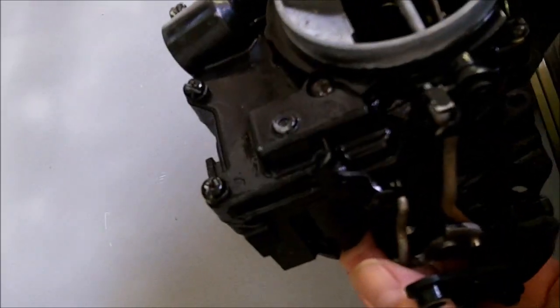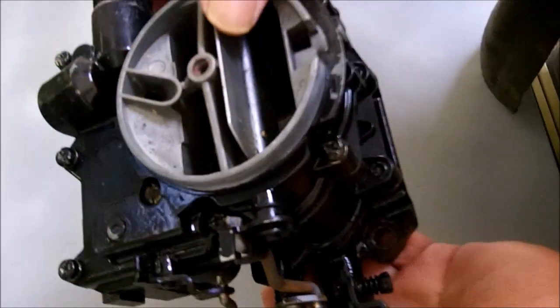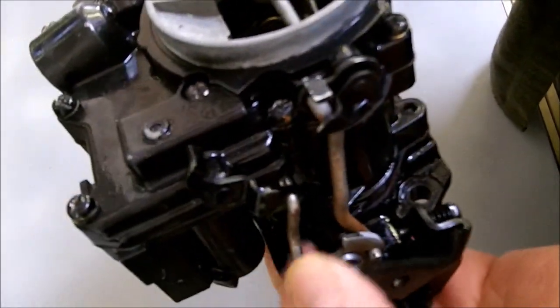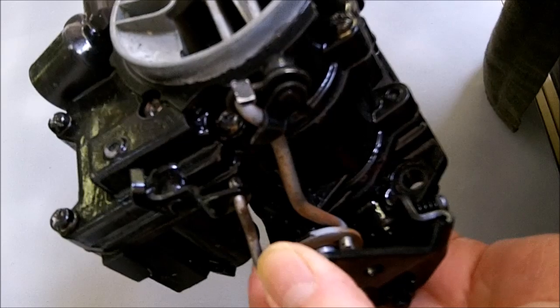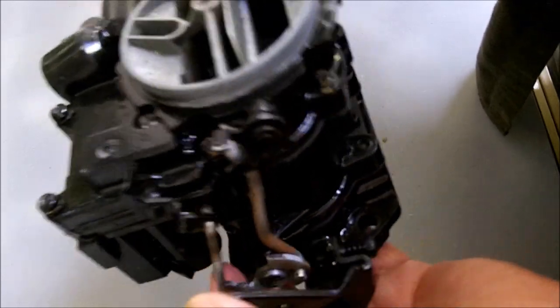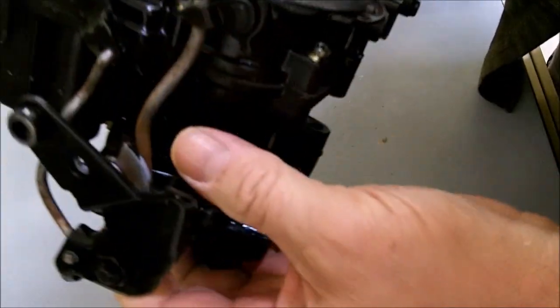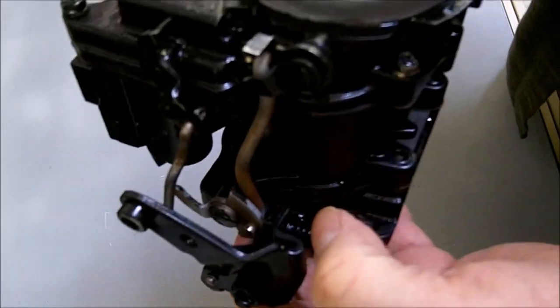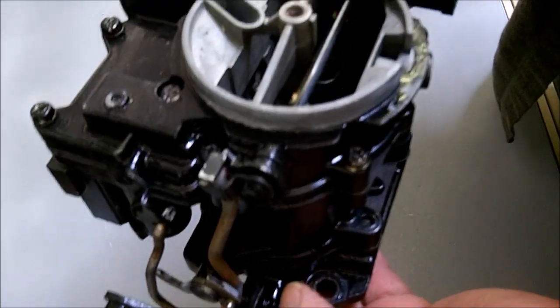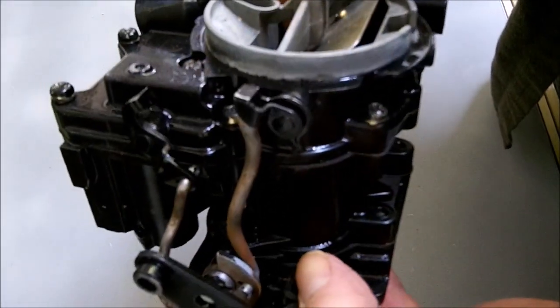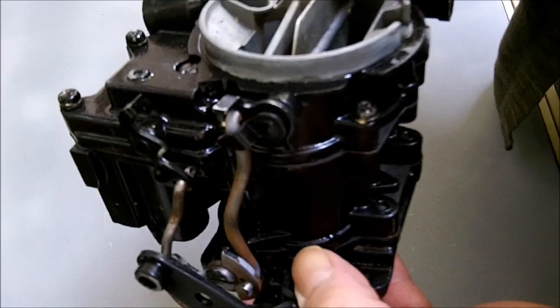At idle when the engine's hot, your choke valve is open like this, and the cam—here's your idle screw—is on the low part of the cam. Now when it's cold and your choke valve closes, you can see how it rides up. The cam moves.